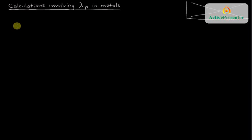In this tutorial, we're going to talk about how to make calculations of what happens at optical wavelengths by knowing the transparency wavelength, lambda p, which is related to the plasma frequency of metals.